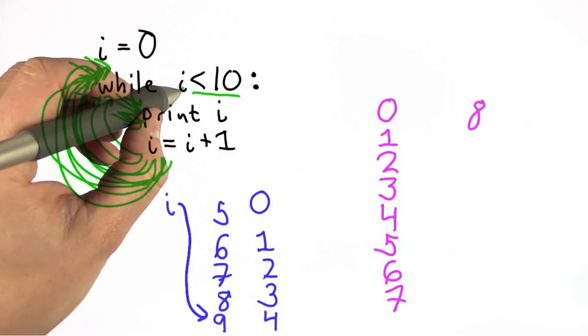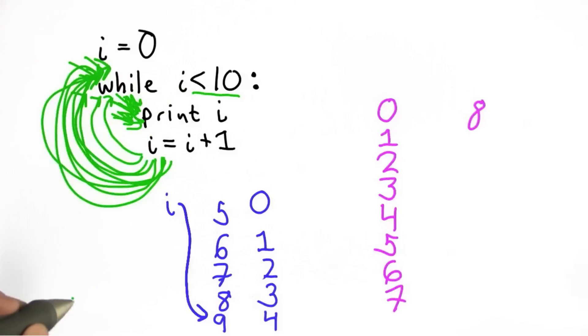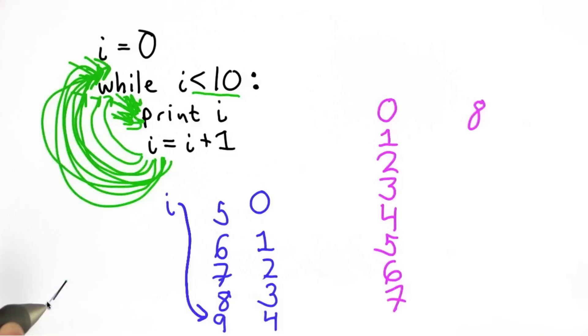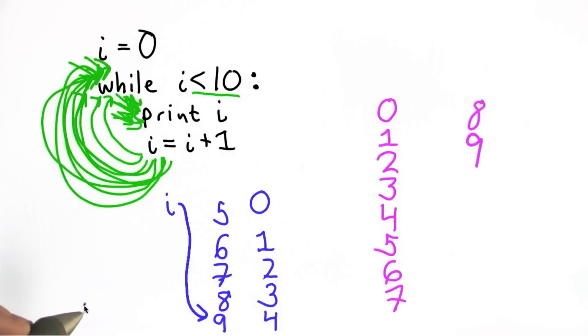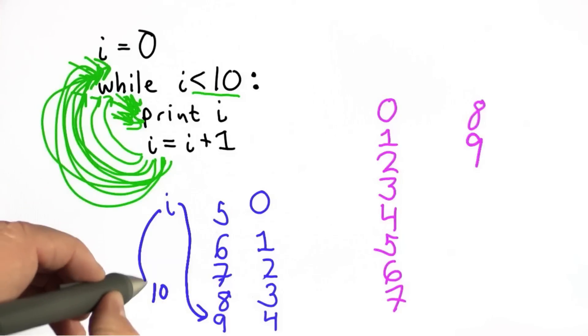We do the test again. 9 is still less than 10. So we're going to print i again. We will print the value 9. Then we add 1. So that's going to add 1 to 9. We'll get 10. And so that's the new value of i.